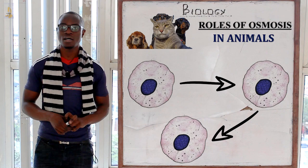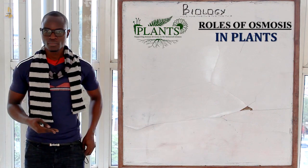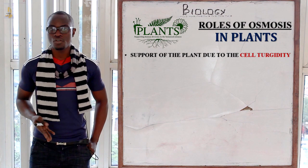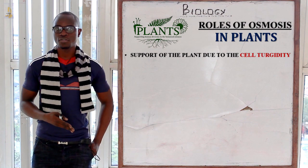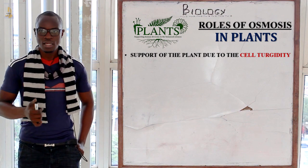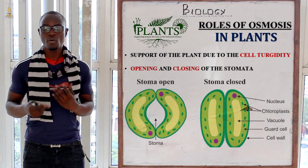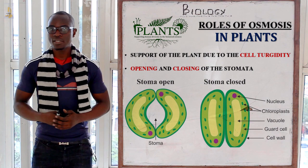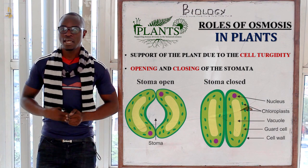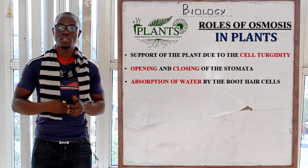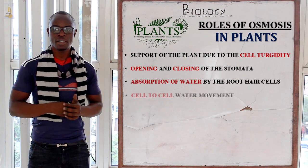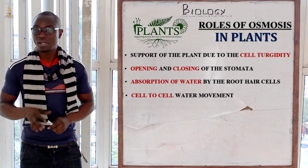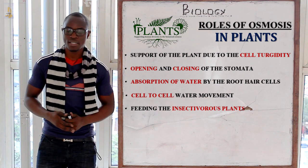Let's look at the roles of osmosis in plants. First, we have support due to turgidity. Then we have the opening and closing of stomata, which we will look at more in the topic of nutrition in plants. We also have absorption of water from the soil through root hairs, cell-to-cell water movement, and lastly, feeding of insectivorous plants.